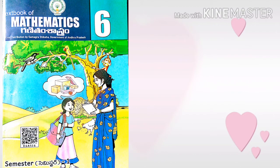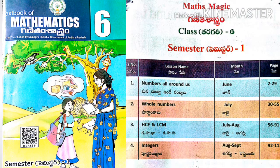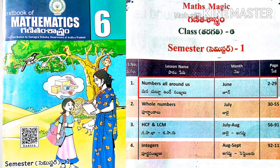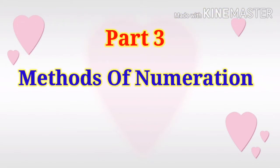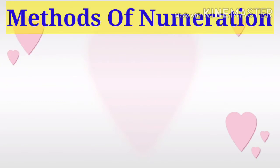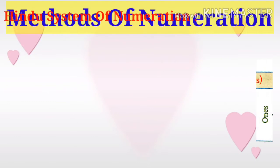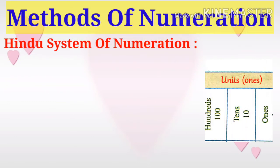Welcome to Shaker Mess. Today we are going to learn sixth class mathematics, semester 1, 'Numbers All Around Us,' part 3: Methods of Numeration. There are two types of methods of numeration: one is the Hindu system of numeration.